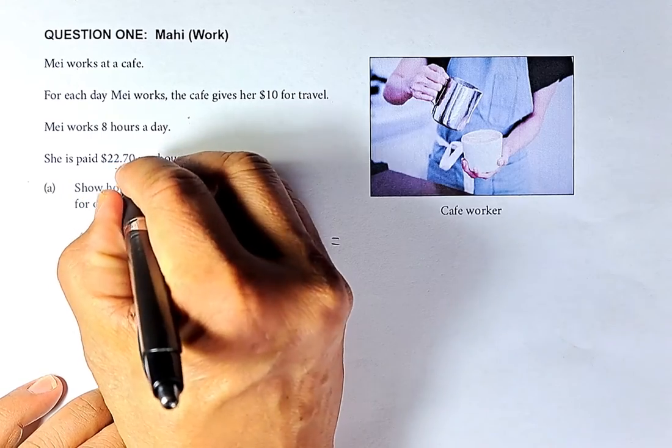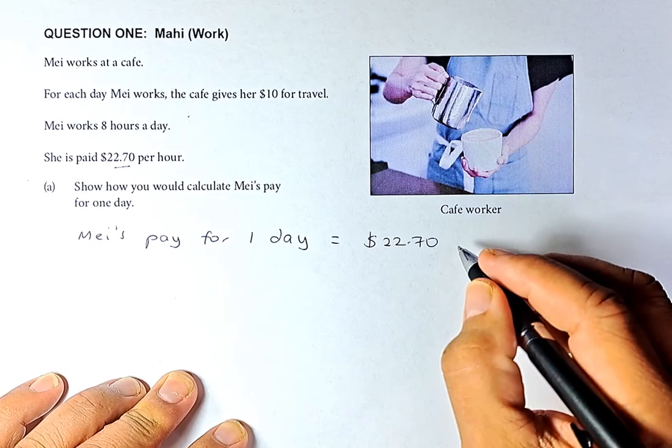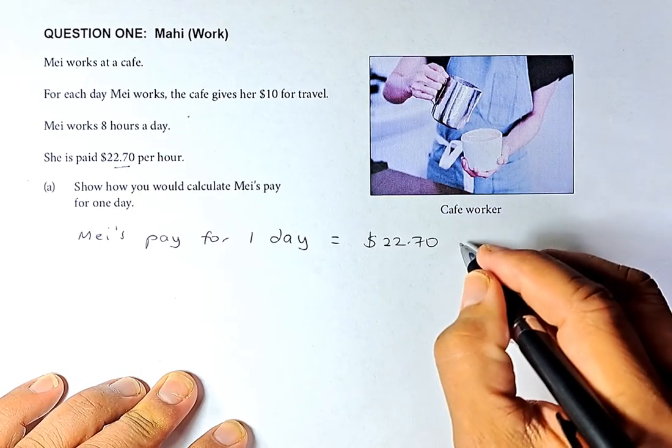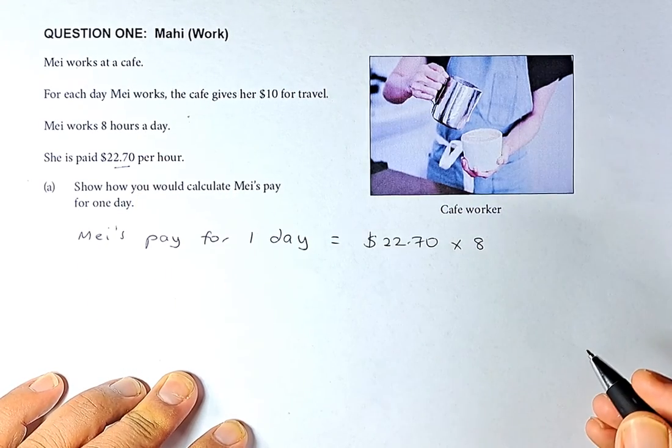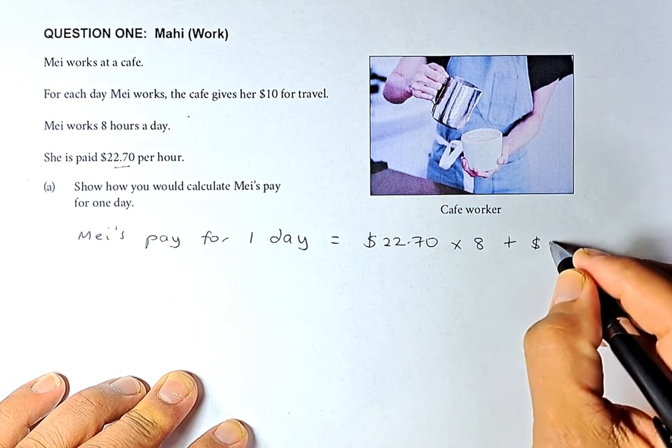To calculate that, we need to take this amount here. She is paid $22.70 per hour. Because she works for 8 hours, you multiply by 8. And then the company pays her $10 for travel, so you're going to add $10.